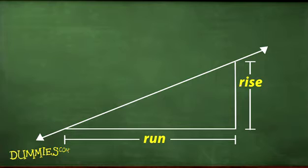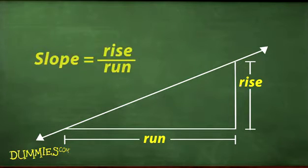In algebra, you learn about the slope of a line, which is equal to the ratio of the rise to the run. In other words, slope equals rise over run. Here you see that the rise is about half as long as the run, so the line has a slope of about one half.